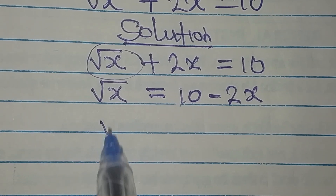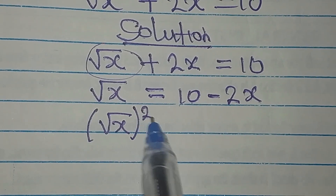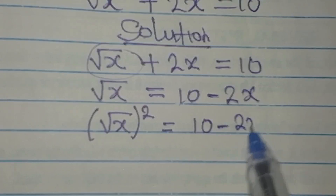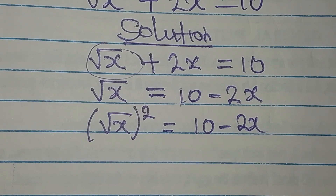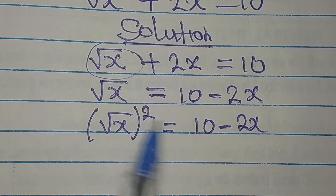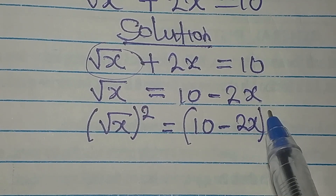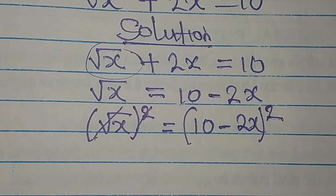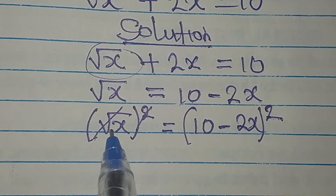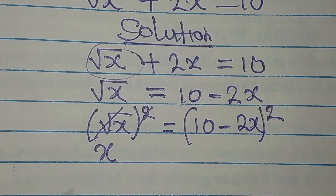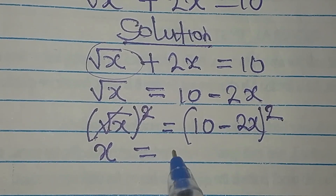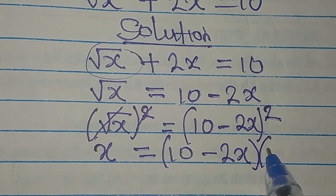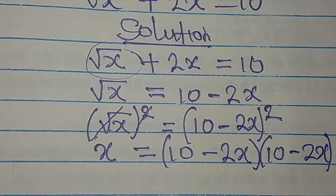So I will now have the square root of x squared on the left hand side, and on the right hand side we'll have 10 minus 2x also squared. If I only squared the left hand side that would be wrong, so we square both sides. That was the reason for squaring both sides — to remove the square root. So we write x equals (10 minus 2x) times (10 minus 2x).